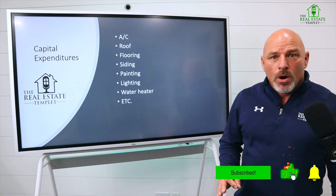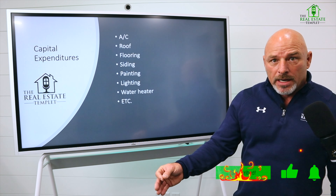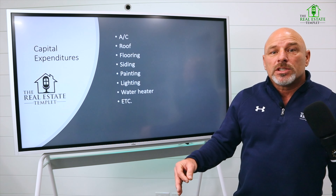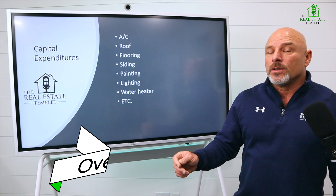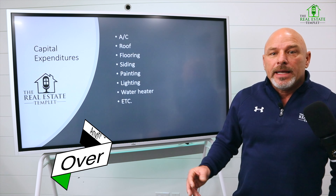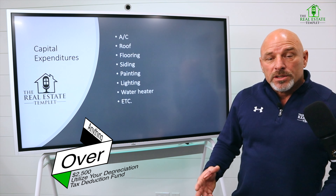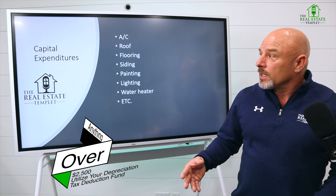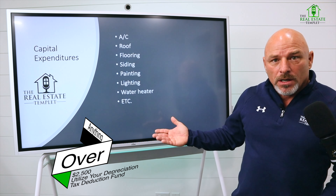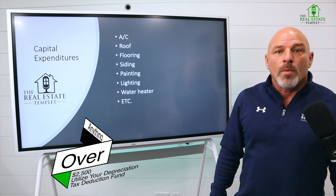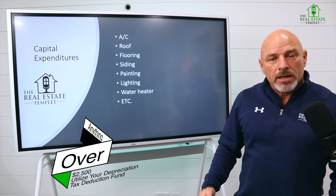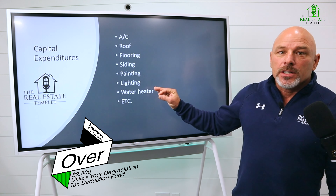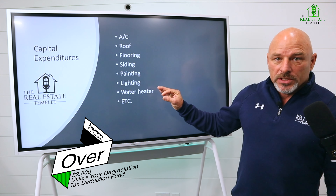I'm going to track that cost and give it to my accountant. My accountant is then going to take that and do depreciation on it — which we discussed in a previous video. The depreciation is going to give me the ability to write that expense off for 27 and a half years on my profits. So it is important to understand what a capital expenditure is, how to track it, and what to do with it.